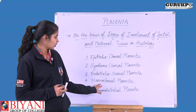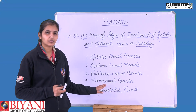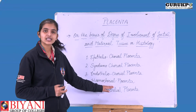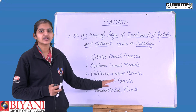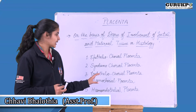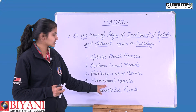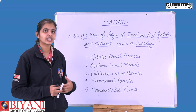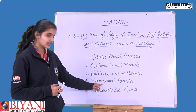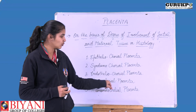Next we are talking about hemochorial placenta. In hemochorial placenta, hemo refers to blood. All maternal layers — epithelial, connective, and endothelial — have been eroded. Now the fetus is directly in contact with maternal blood. The fetal chorial layer and the mother's blood are in direct contact. That is called hemochorial placenta.